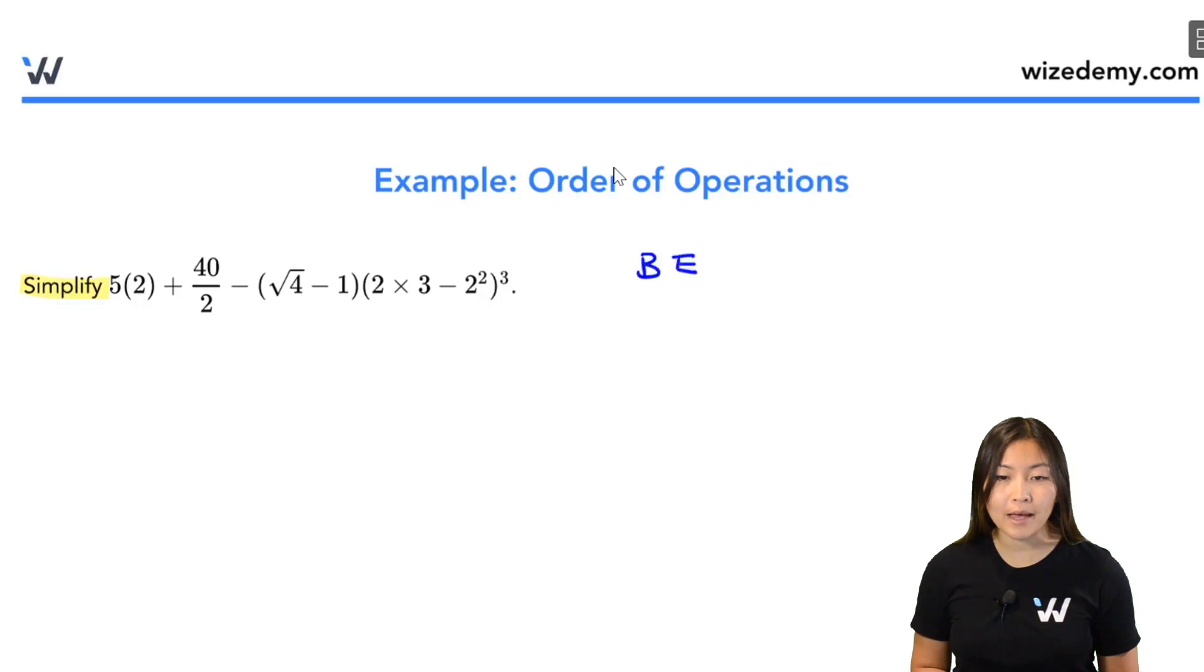So again, we are going to follow BEDMAS. Alright, starting with B, which is brackets. I do see some brackets here. So we need to simplify what's inside the bracket.